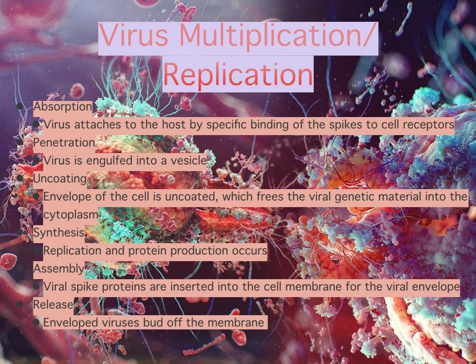The first step of the replication cycle is absorption — this is when a virus attaches itself to the host by binding its spikes to the cell receptors. After that, penetration and uncoating occur simultaneously. Synthesis occurs next; during synthesis, protein production occurs and the cell synthesizes basic components of new viruses like capsomers and spikes. After that, assembly occurs and the nucleocapsid is formed. Finally, release occurs. The enveloped viruses bud off the membrane, which could be labeled as exocytosis, and infect other cells. If the virus is naked, it just lyses before the release.